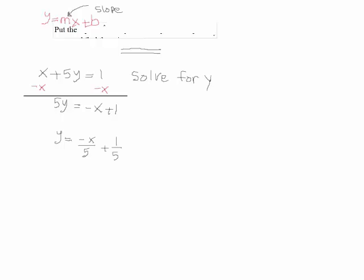Right. So this would be y equals... I mean, if you want to write 5 here and then show it like this, that's fine. You're dividing each term by 5. So you get y equals minus 1 over 5, that's your coefficient of x, plus 1 over 5.